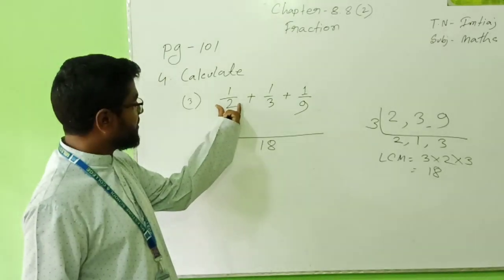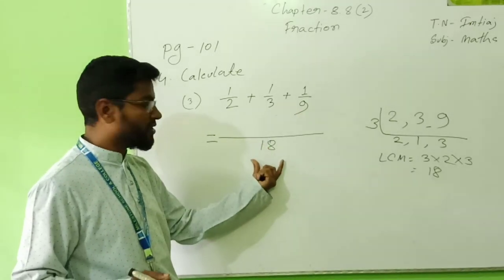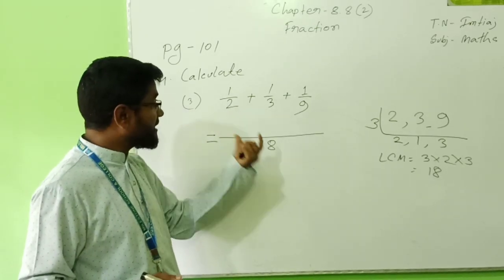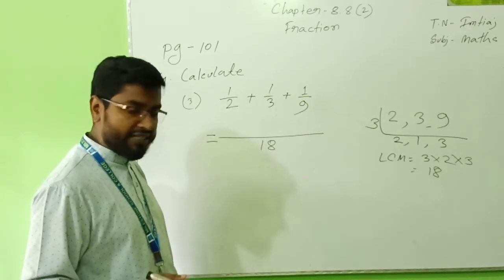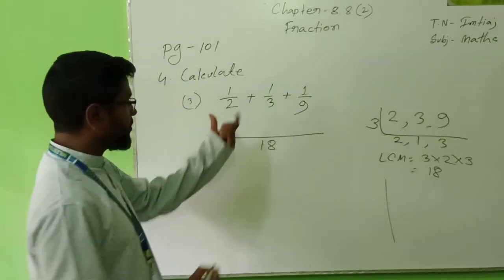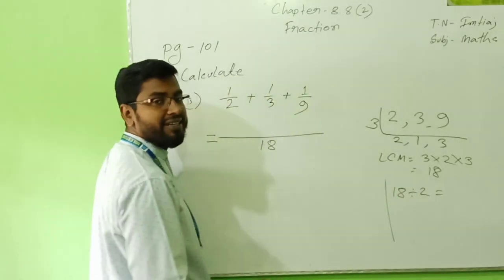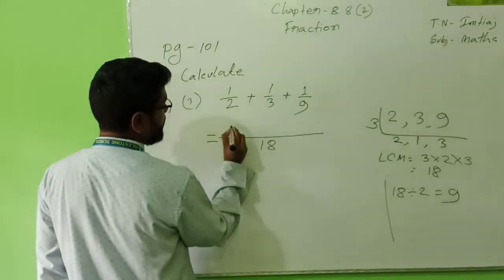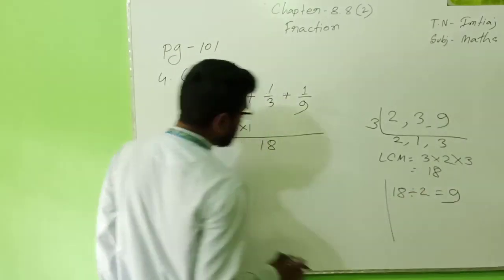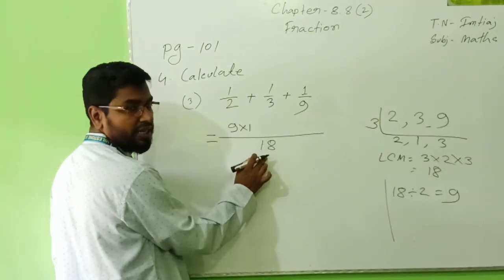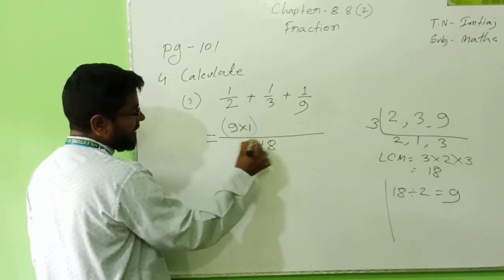Now see, instead of 2, I wrote 18. Instead of 3, I wrote 18. Instead of 9, I wrote 18. So how many times bigger than this number? So find out, there is 1, 2, 3 fractions. I will write here what? 18 divided by first fraction denominator, which is 2. What will we have? Yes, 9. That 9 I will multiply with this one, with the numerator. Look, 9 I got by dividing. That means if we multiply 2 with 9, we got 18. It is 9 times 2 that becomes 18. So that 9 I have multiplied upper 1.